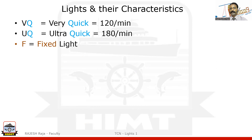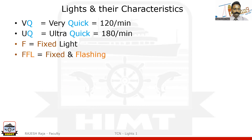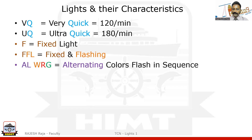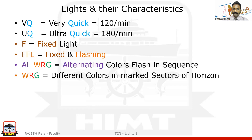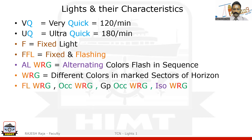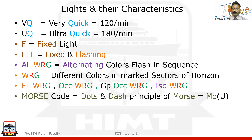A fixed light means the light is always on — for example, on a high-rise building you might see a fixed red light always on. Fixed and flashing means a low-intensity light is always on, with a sudden spike of a high-intensity flash. You can have alternating white, red, and green, where different colors come in sequence. Colors can also be separated into different horizontal sectors around the full 360-degree azimuth, with only one particular color visible from each sector, as marked on the chart. Different rhythms — flashing, occulting, isophase — are possible within those sectors as well. The last character is Morse code, using the dot and dash principle, such as Morse code Uniform or Alpha.